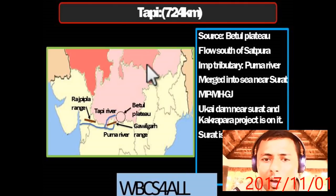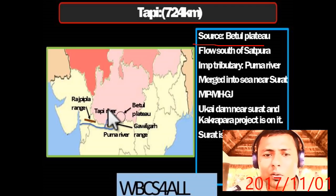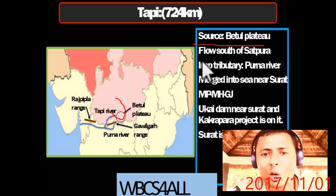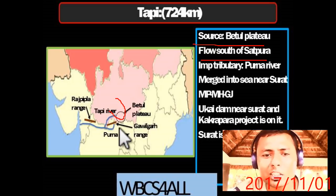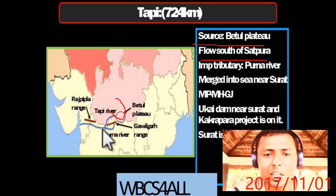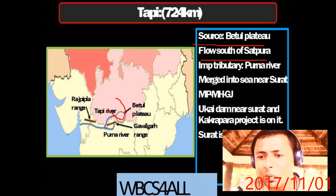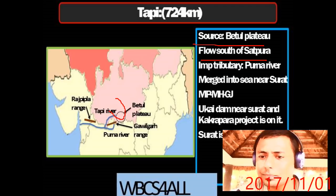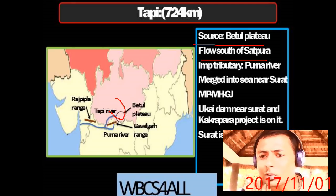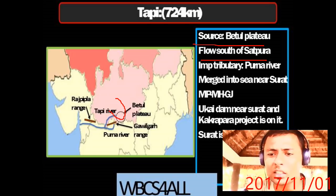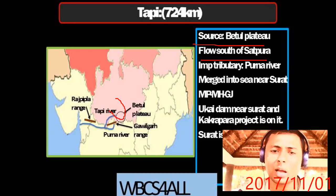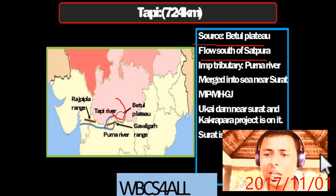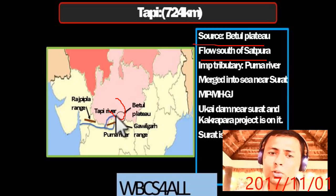The Tapi River has its source at the Betul Plateau in Madhya Pradesh. It flows south of the Satpura range. An important tributary is the Purna River. It merges into the sea near Gujarat. From Madhya Pradesh through Maharashtra to Gujarat, key features include Ukai Dam near Surat and the Kakrapar Project — both on the Tapi River. Surat is also located on the Tapi.